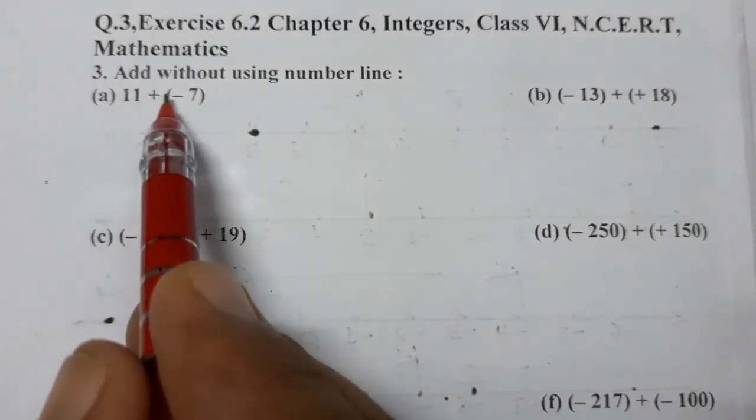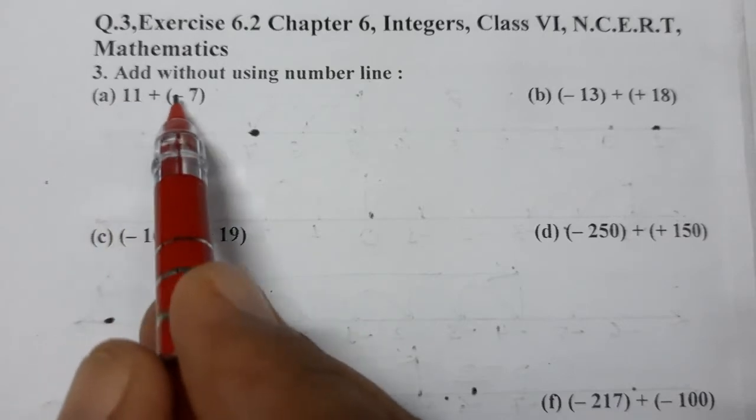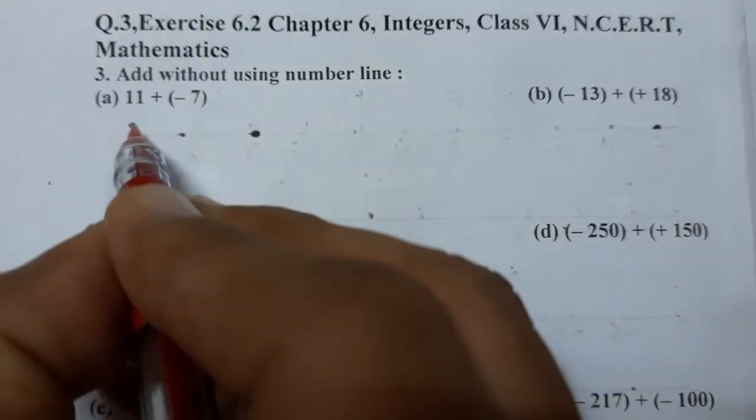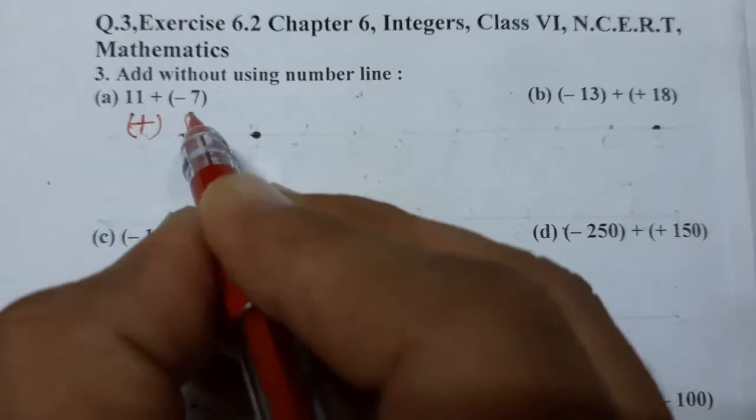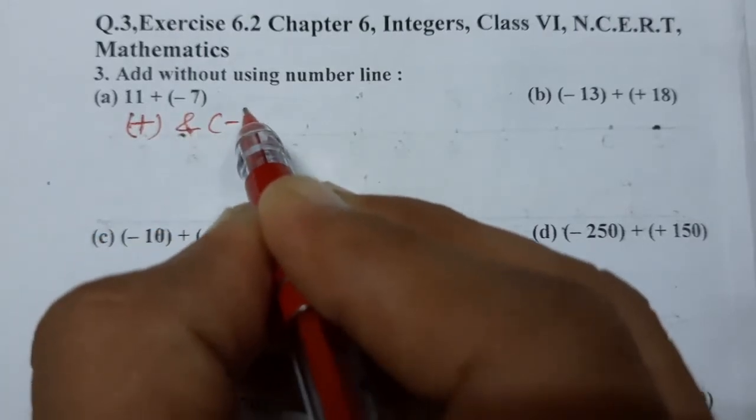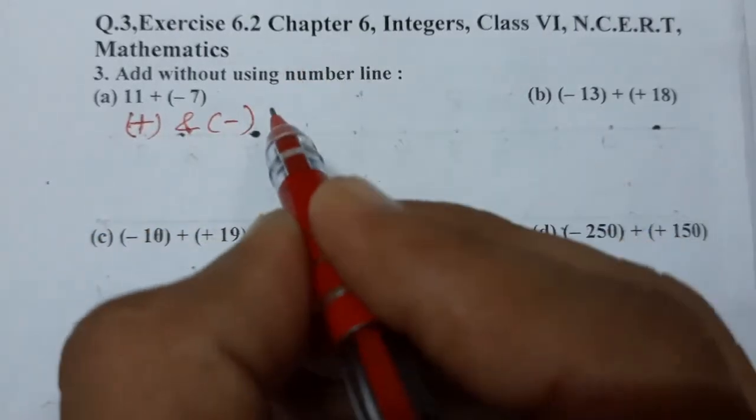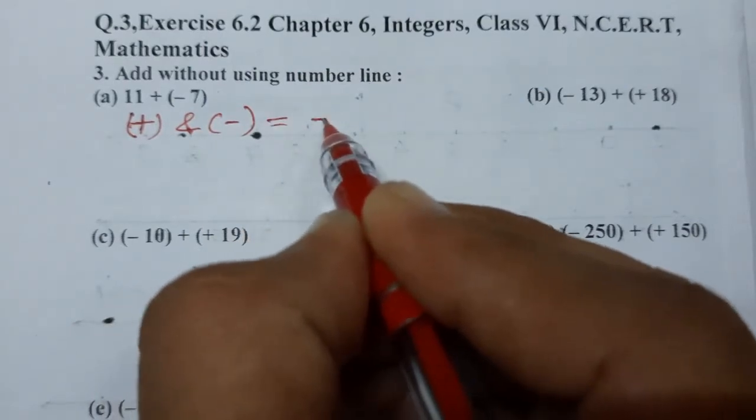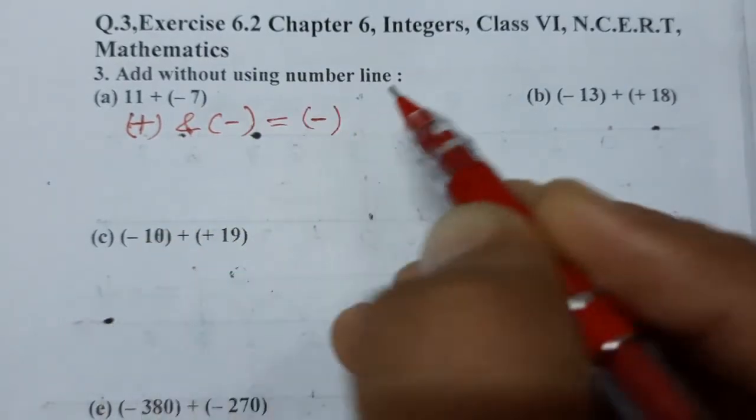11 plus minus 7. One is positive and one is negative, and we know plus minus is minus. We have to subtract whenever one plus and one minus are there. We have to subtract, so let's subtract.